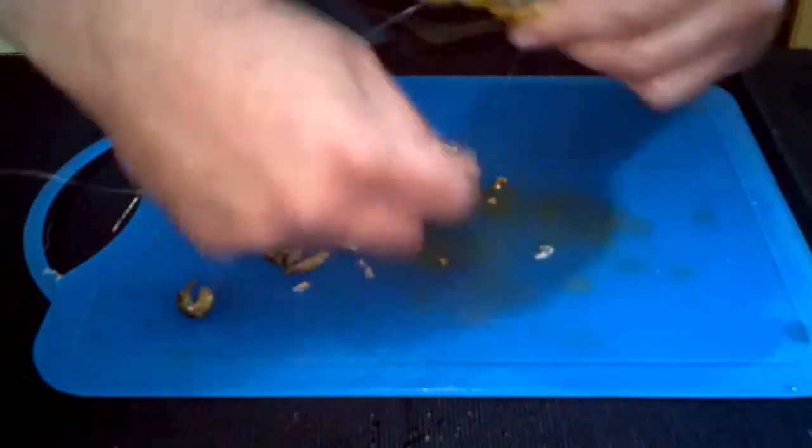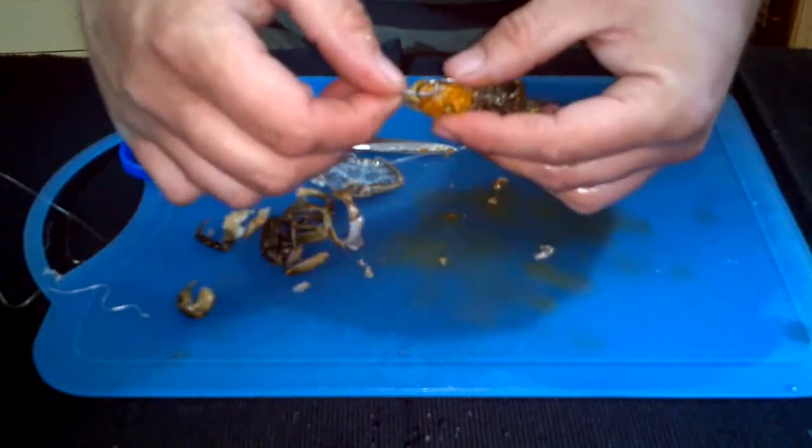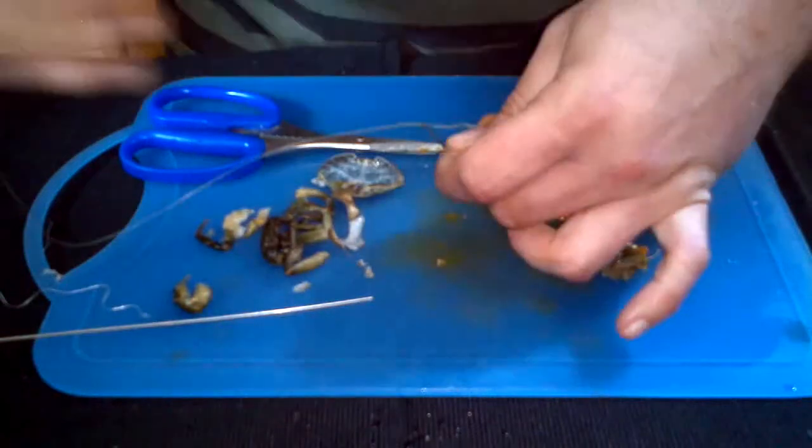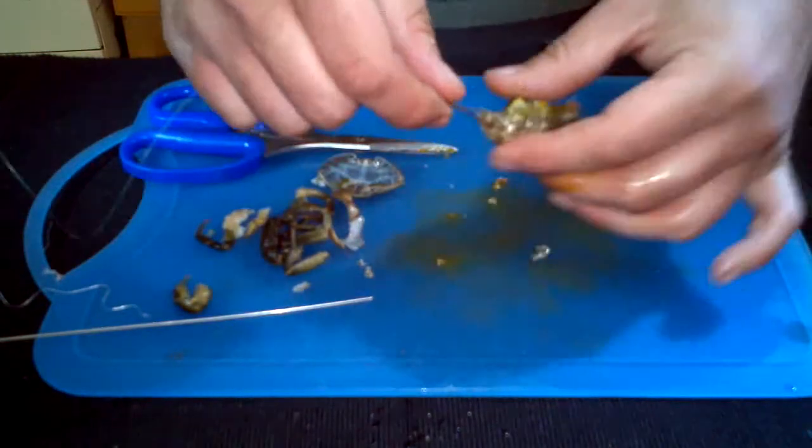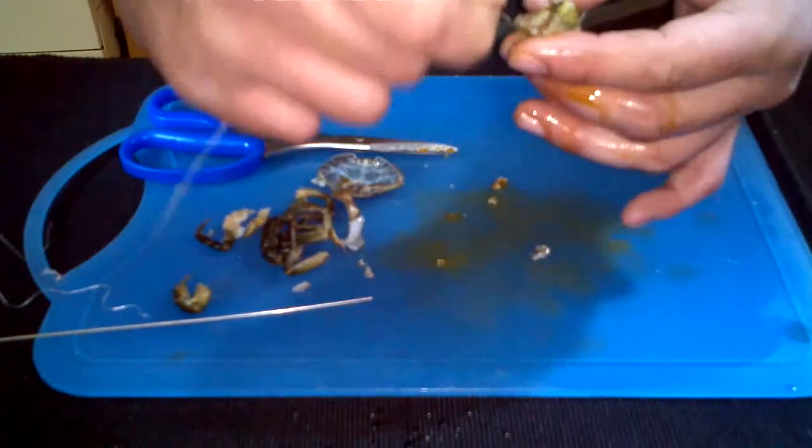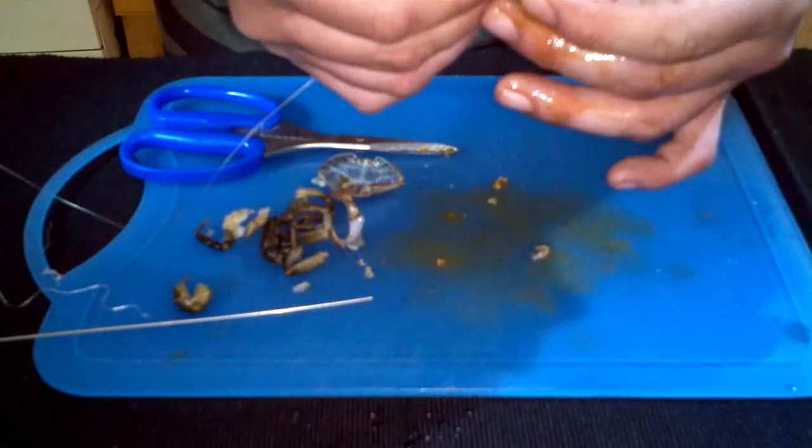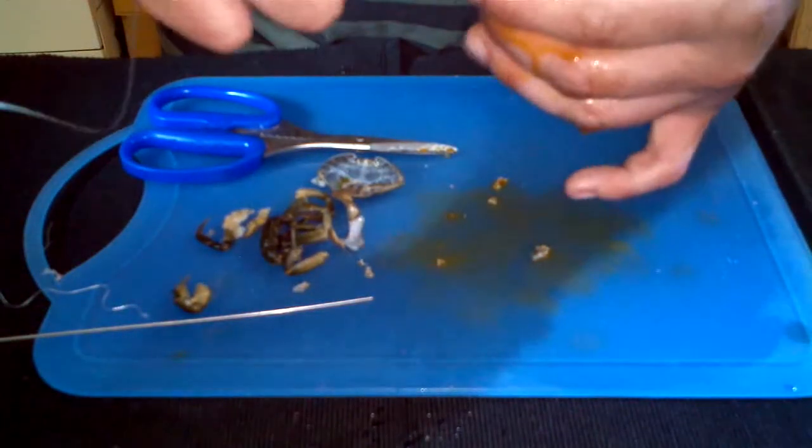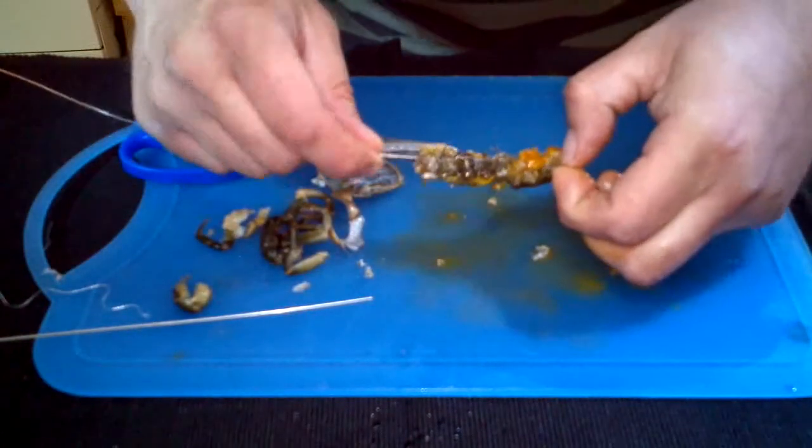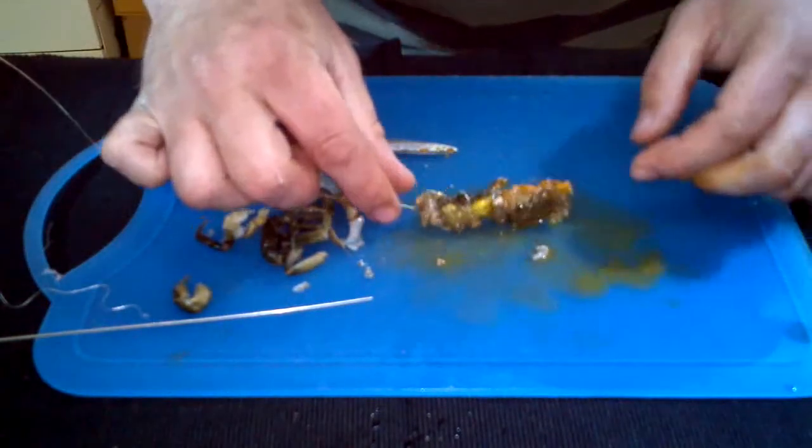As always, a little bit extra at the end for where the other hook on your paternoster is going to go. There you have it. Nice peeler crab bait.